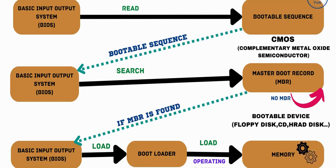Step 3: Loading of the Operating System. After the successful completion of POST, BIOS proceeds to load the operating system. CMOS — Complementary Metal Oxide Semiconductor — contains bootable sequences for searching the Master Boot Record. The bootable sequences present in CMOS are read by BIOS. Based on these sequences, BIOS searches for the Master Boot Record (MBR) from the first bootable device. Examples of bootable devices include floppy disk, CD-ROM, and hard disk. If MBR is not found, it continues searching until it is found.